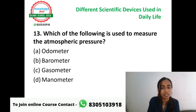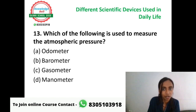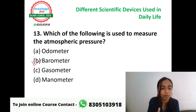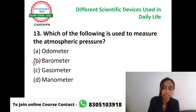Question number thirteen: which of the following is used to measure the atmospheric pressure? The gases in the atmosphere exert pressure — what device measures that pressure? Options are odometer, barometer, gasometer, and manometer. The correct answer is barometer. Barometer is the device used to measure the pressure of the atmosphere, or atmospheric pressure. Option B, barometer, is correct.